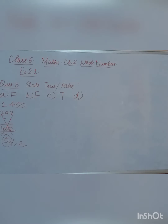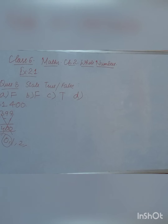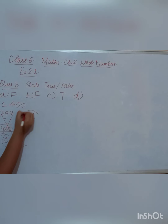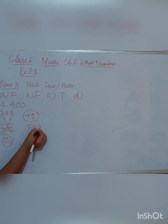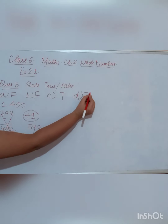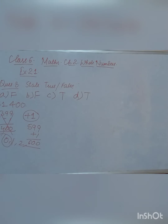The 4th statement says: '600 is the successor of 599.' The successor means the number plus 1. So 599 plus 1 equals 600. That means the statement is true — 600 is indeed the successor of 599.